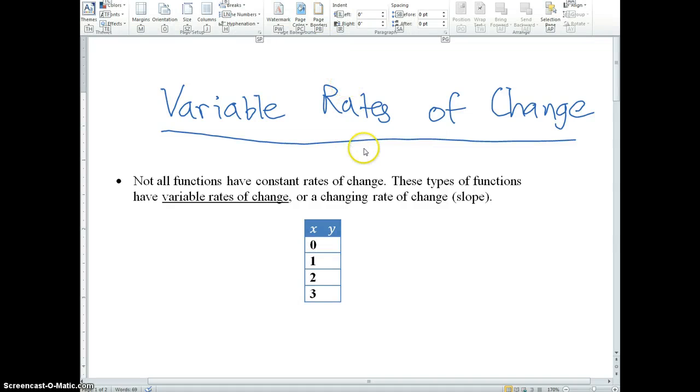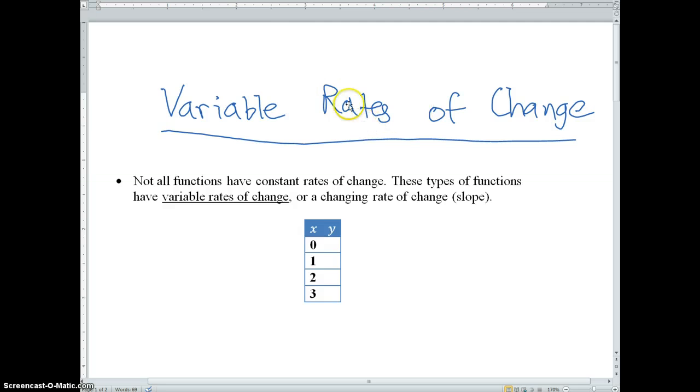In this video, we're going to talk a little bit about variable rates of change, which is a new concept we'll be exploring. So, not all functions have constant rates of change. We know that linear functions do, but there are functions that don't. These types of functions are called functions that have variable rates of change, or in other words, a changing slope that constantly changes.